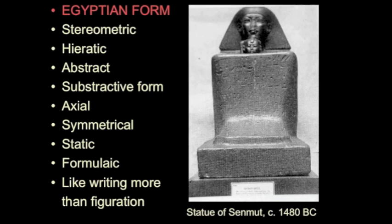What is characteristically Egyptian about this statue? The headdress. And organizationally, formally, what is so Egyptian about it? It's frontal — a frontal object. What else is really Egyptian about it? It's completely static. It does not represent movement. It does not imply action in the world.